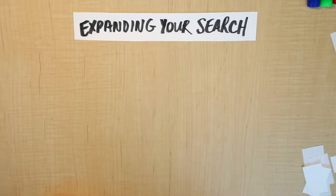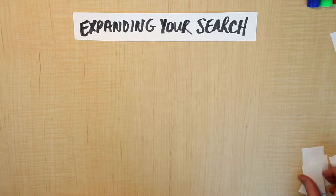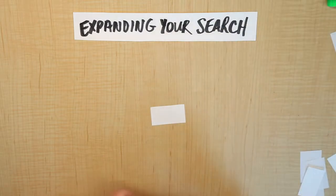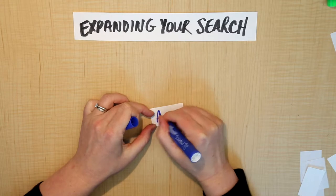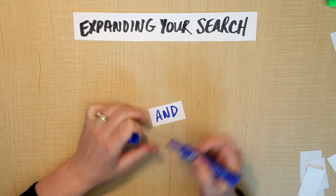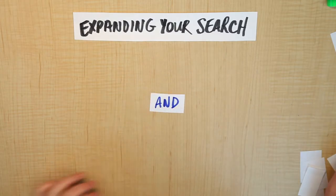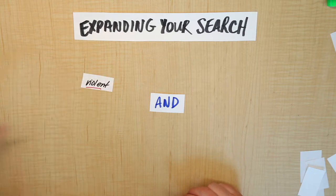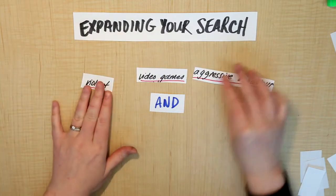The first technique you're going to be using is to use the word AND. This is a connecting word that we can use in the database for our searches. Our three main concepts were violent, video games, and aggressive behavior.